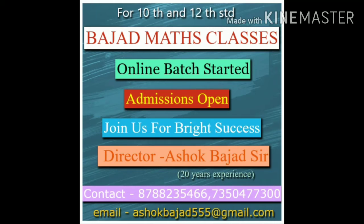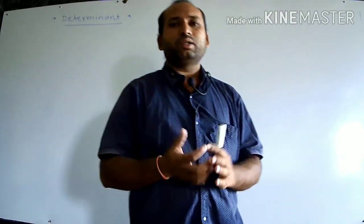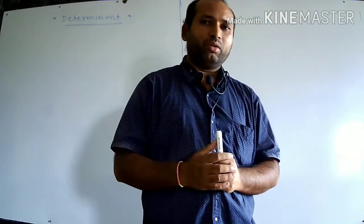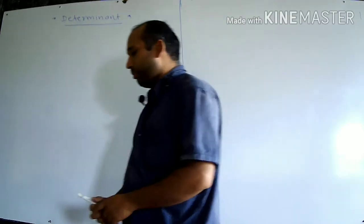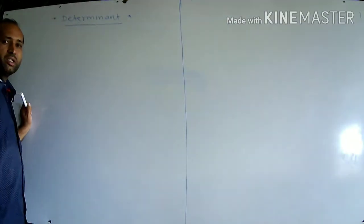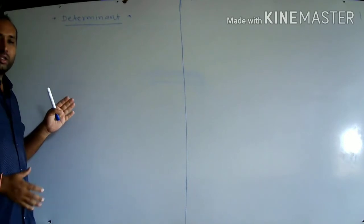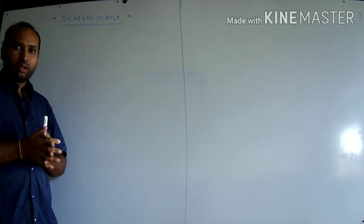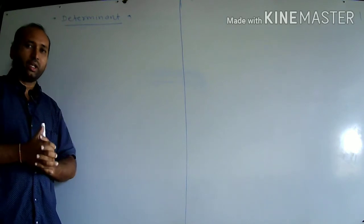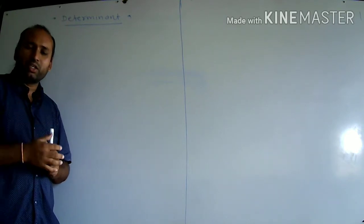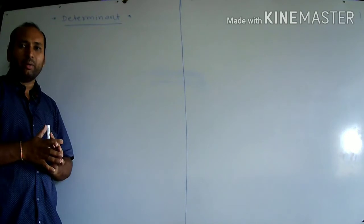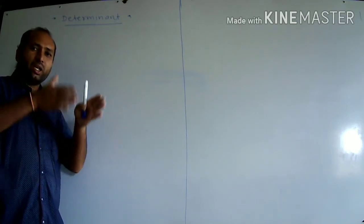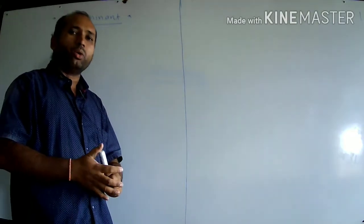Welcome to Bazar Maths Online Classes. An arrangement of numbers or alphabets in rows and columns, enclosed by two vertical lines, is known as a determinant.